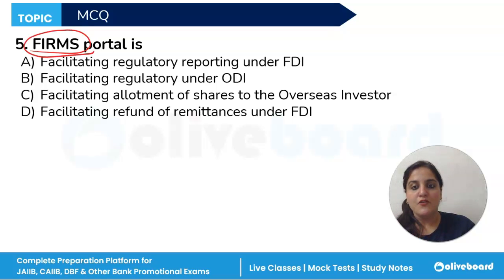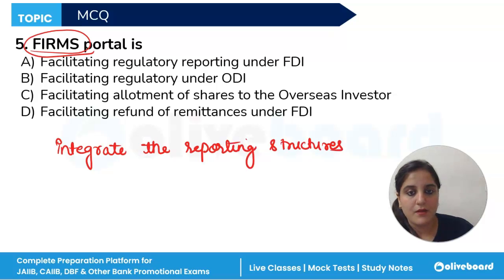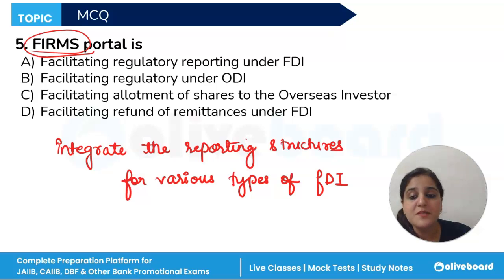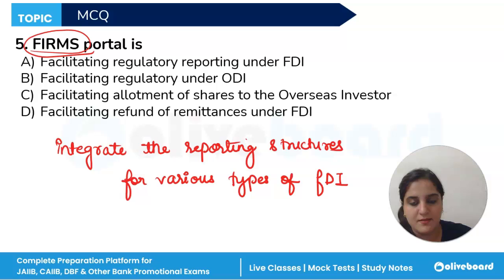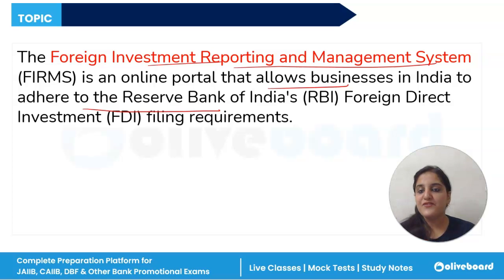An important topic: the FIRMS portal. The FIRMS — Foreign Investment Reporting and Management System — portal was introduced to integrate the reporting structures for various types of foreign investments in India. Features include auto-acknowledgement, where the portal automatically acknowledges submitted forms with a timestamp, verification, and late submission fees. It is an online portal that allows businesses in India to adhere to Reserve Bank of India FDI filing requirements.